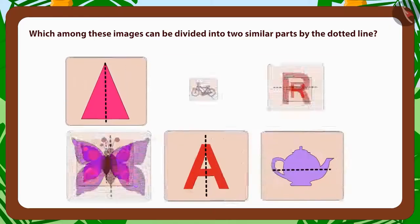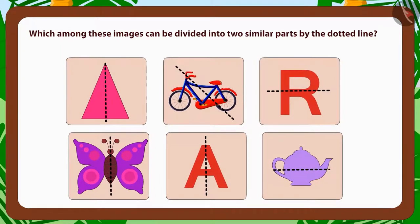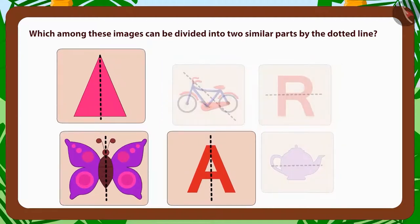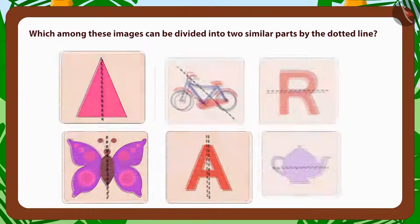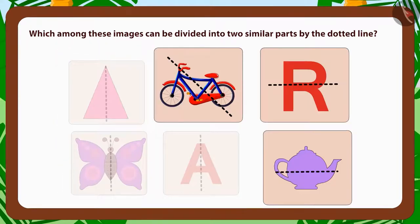Children, can you guess which among these images can be divided into two similar parts by a dotted line? These are images that are being divided into two similar parts by the dotted lines. And these are not getting divided into two similar parts.